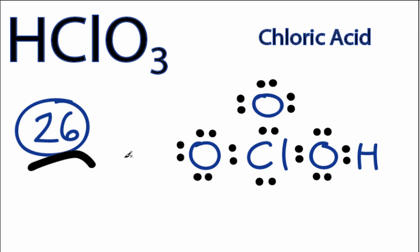The thing that you want to look at, though, is chlorine is in period 3 of the periodic table. It can hold more than 8 valence electrons. So we really should check our formal charges to see if this is the best structure for HClO3.